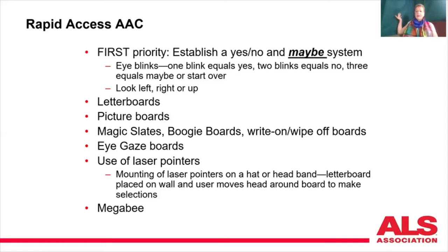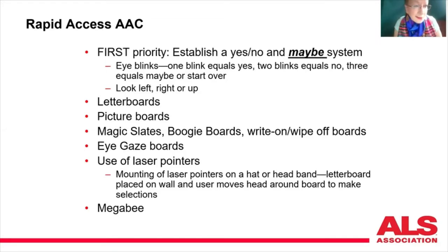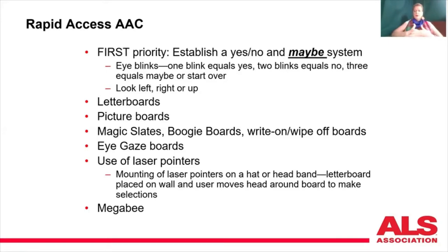Once you establish a system, you put it on the wall and write down how they do it. A lot of people like to use blinks, but I'm not a fan for people with ALS because sometimes they get a really lazy blink and it's ambiguous. I usually like to give targets — look to the right for yes, look to the left for no, look up for maybe — so you know you're receiving the information correctly.